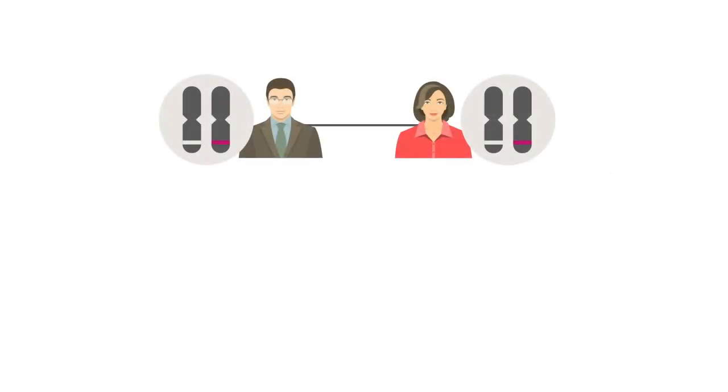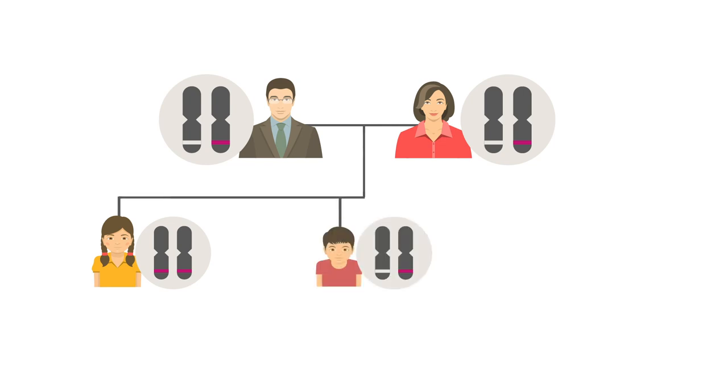It is important to explain to parents that as chance has no memory, the 1 in 4 probability of inheriting two copies of the altered gene for the condition applies for each pregnancy, irrespective of whether or not the parents have already had children with or without the condition.